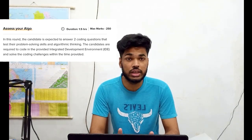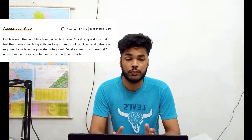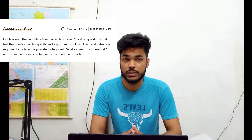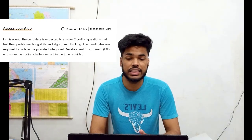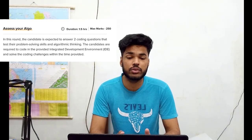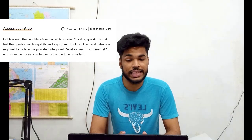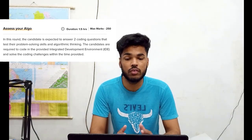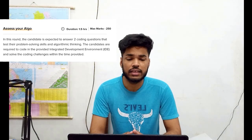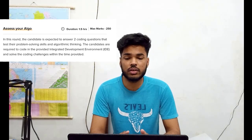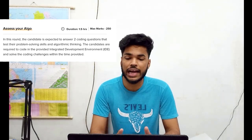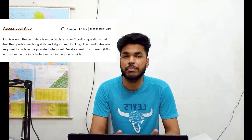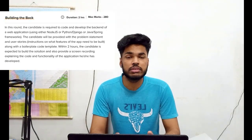Round two — 'Assess Your Algo' — has a duration of 1.5 hours and 250 marks. In this round the candidate is expected to answer two coding questions that test their problem-solving and algorithmic thinking. The candidates are required to code in the provided IDE and solve the coding challenges within the time provided.